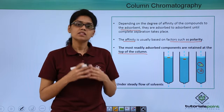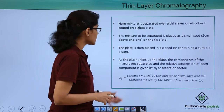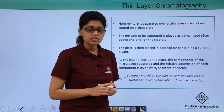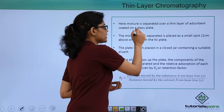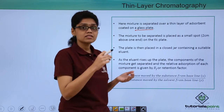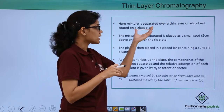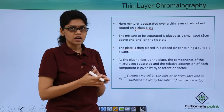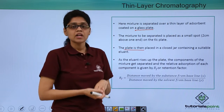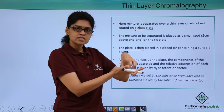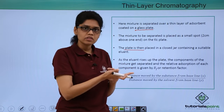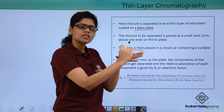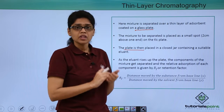Now let us understand thin layer chromatography. In thin layer chromatography, the mixture is placed over a thin layer of adsorbent spread on a glass plate. The mixture to be separated is placed as a dot on this glass plate, called a TLC plate. This plate is then placed in a closed jar which contains a solvent or eluent. The TLC plate is positioned so that the dot of mixture is just a little above the base of the solvent.